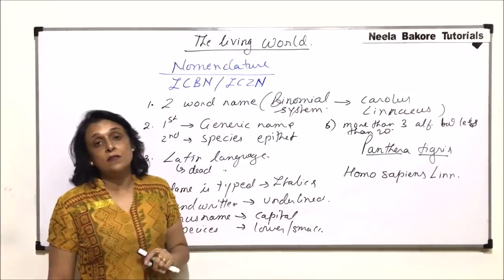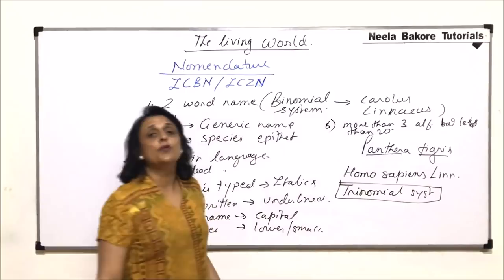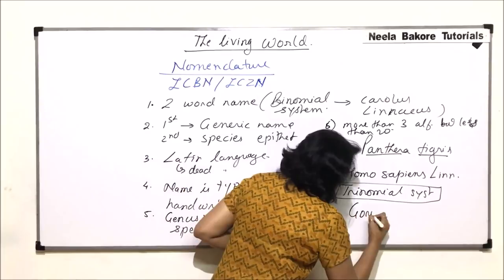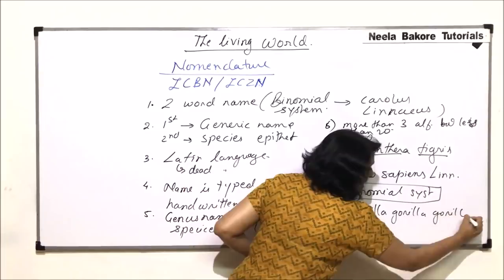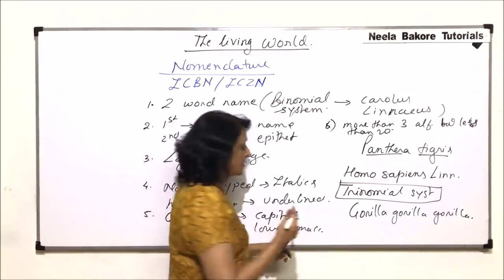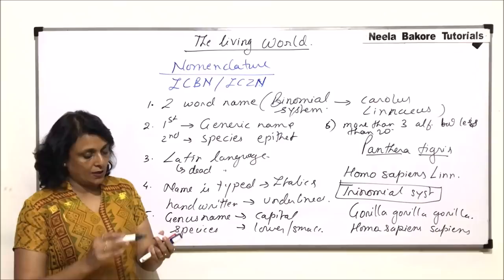The trinomial system of nomenclature is also in use. In the trinomial system there are three words. These three words can include a subspecies. For example, Gorilla gorilla gorilla — the first word is the genus name, the second is the species name, and the third is the subspecies name. Similarly, our trinomial name is Homo sapiens sapiens. So this is the trinomial system of nomenclature.